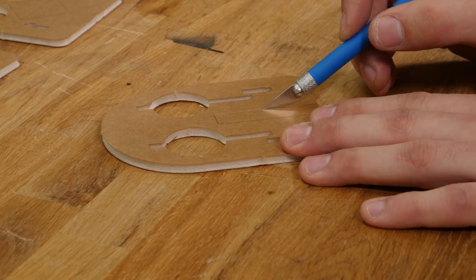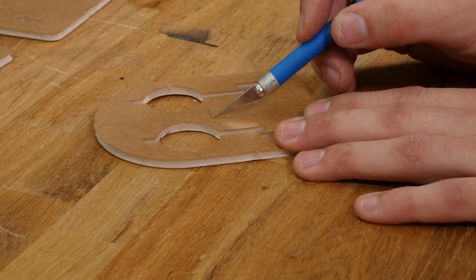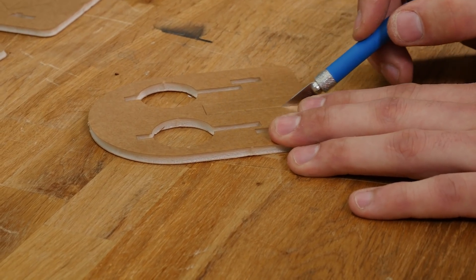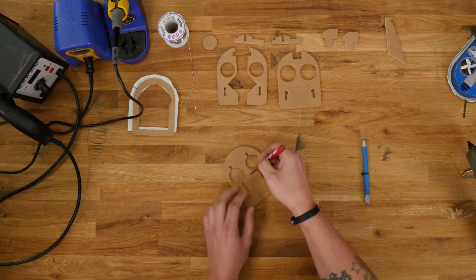We use the exacto knife to go over the score cuts so the foam removes cleanly. Careful not to cut through the back paper. With that done, we just scrape out the foam.